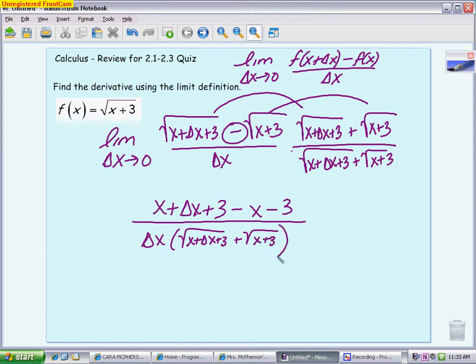If things aren't canceling, you know that something went wrong. Usually it's the minus sign that didn't get used. So you're going to cancel your x's, cancel your 3's. You're left with a delta x over a delta x, so those will also cancel. So your numerator is just 1.